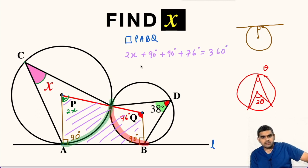So on simplifying this, we will get 2x plus, if we add all the three angles, this will be 256 degrees is equal to 360 degrees. So 2x will be 360 minus 256, which is 104 degrees.